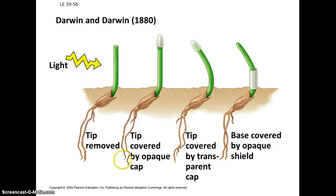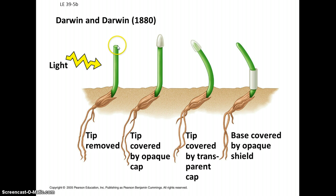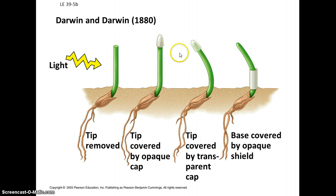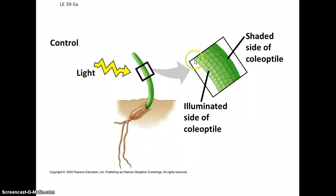Light is extremely important for plants. Going all the way back to Darwin — Charles Darwin and his son — they did experiments with light. As you probably know, if you put a plant by the window, it'll start growing towards the light. They were curious exactly how this happens — is it the tip of the shoot or somewhere along the shoot that is responsible? What they showed was that if you sever or cover the tip, the plant will not respond to the light. Whereas if you leave the tip open or cover it with a transparent cap, it will still bend towards the light. So the tip is extremely important when it comes to responding to light.